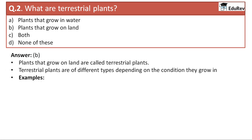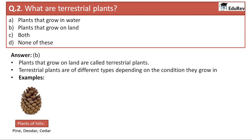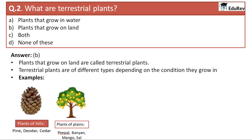There are different types of terrestrial plants depending on the condition they grow in. The first type is plants of hills or mountains — for example, pine tree, deodar tree, seda tree, etc. The second type is plants of plains — peepal tree, banyan tree, mango tree, sal tree, etc. Both plants of hills and plants of plains are called terrestrial plants because plains are land and hills are land also.